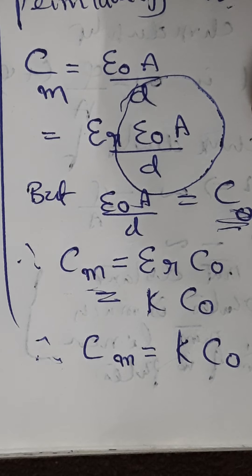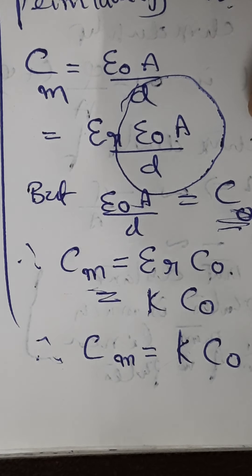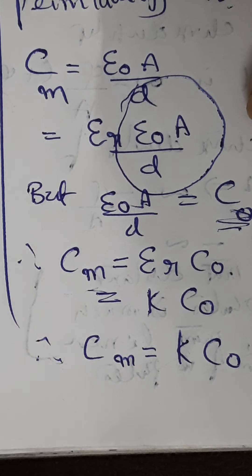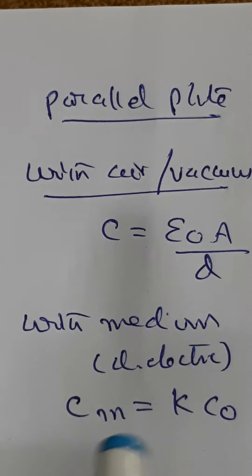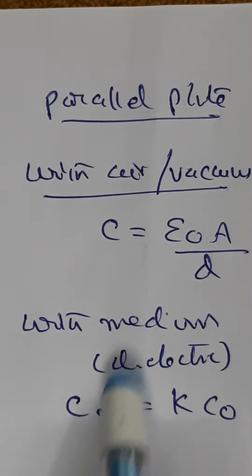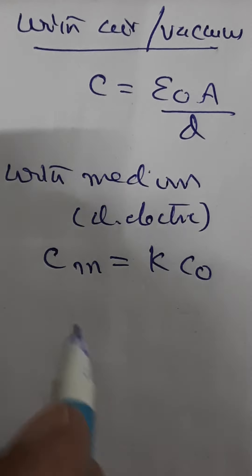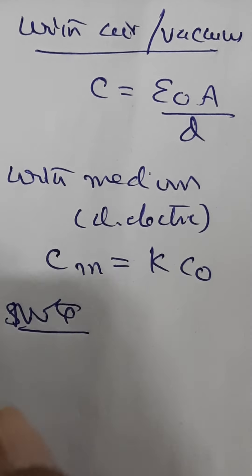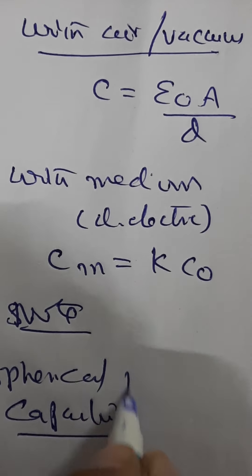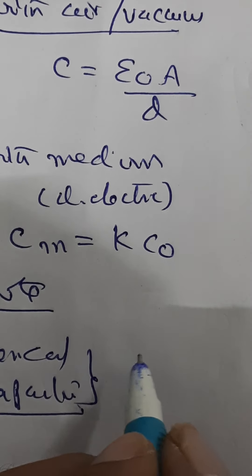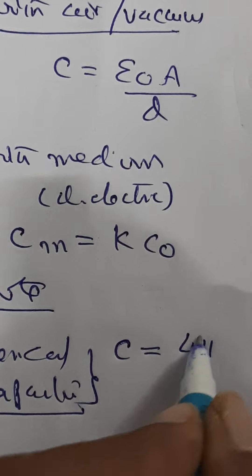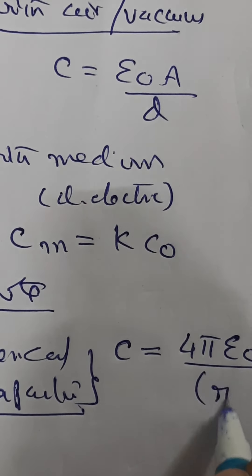Similarly, though not part of the main syllabus, we can derive expressions for a spherical capacitor and a cylindrical capacitor. For a spherical capacitor with inner radius R_A and outer radius R_B, the capacitance is C equals 4 pi epsilon-naught times R_A times R_B divided by R_B minus R_A.